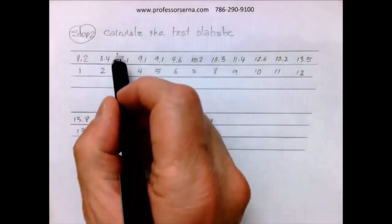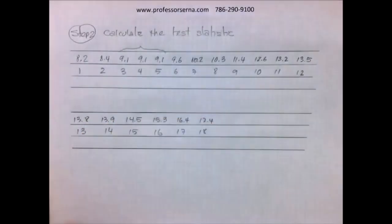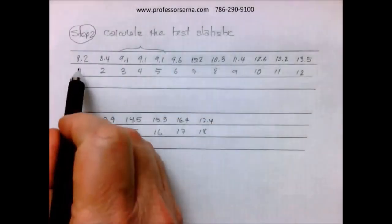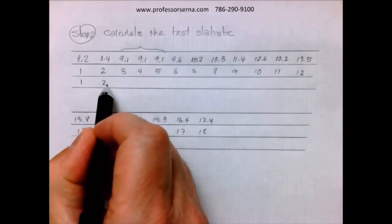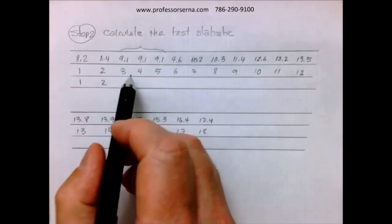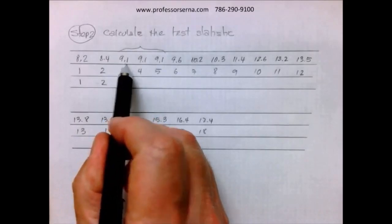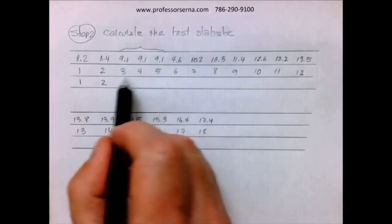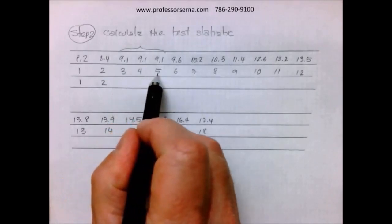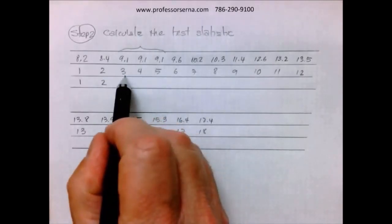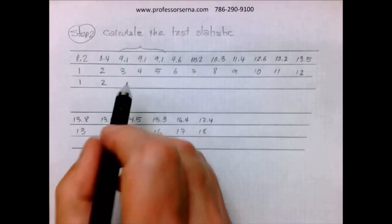I see that in here we have a triple tie. So 8.2 is going to get rank one, 8.4 is going to get rank two. Now there is no reason for these three 9.1s to get different ranks. So what we do is add the ranks, divide them by three, you're going to get four when you do that.